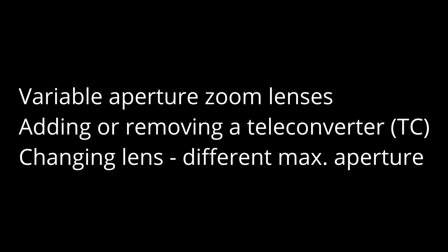This setting also only applies when you're shooting variable aperture zoom lenses, adding or removing a teleconverter (TC), or changing lenses to a lens that has a different maximum aperture. Those are the parameters for when this setting comes into play.